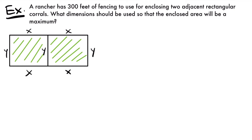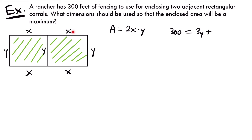Let's write down our two equations, starting with the area equation and then the perimeter equation. The area is length times width, which is 2x times y, so the area equals 2xy. This will be our primary equation — the one we take the derivative of once we have it in terms of one variable. For our perimeter equation: the perimeter is 300 feet, and adding all sides we have three sides labeled y and four sides labeled x, giving us 3y plus 4x equals 300.